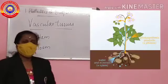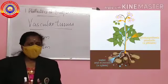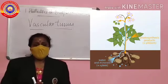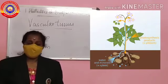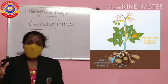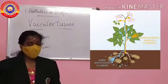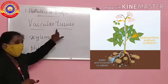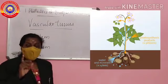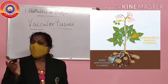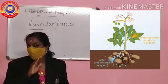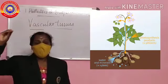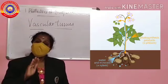Our next topic is vascular tissues. Vascular tissues are xylem and phloem. The roots absorb water and minerals from the soil. It is the xylem vessels that take the water and minerals to the leaves. The leaves, with the help of sunlight and carbon dioxide which enter through the stomata, prepare their food. And these foods are sent to all parts of the plants by the phloem vessels.